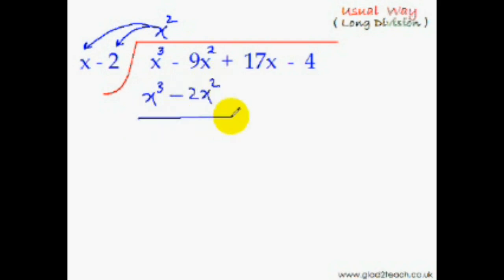Now you subtract these terms. Subtraction in algebra means changing the signs and then adding the terms. Since this is plus x³, it will become minus x³. This is minus 2x², so it will become plus 2x². This positive x³ and this negative x³ will cancel each other out. Minus 9x² plus 2x² is minus 7x², and you simply drop down these remaining terms.